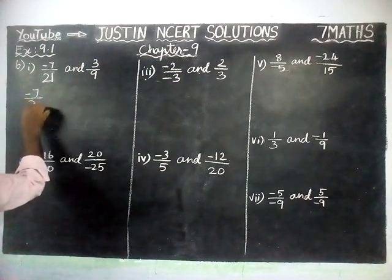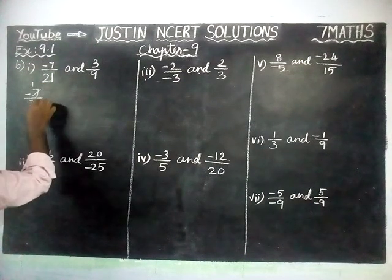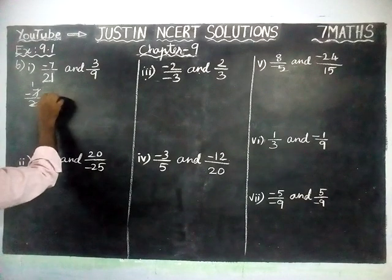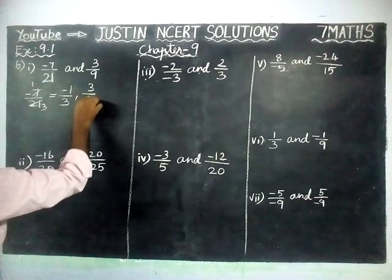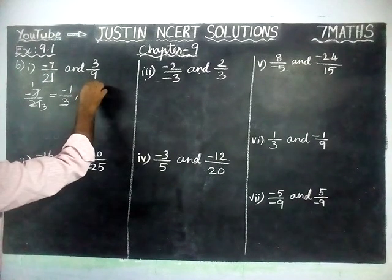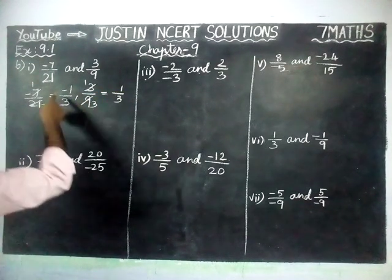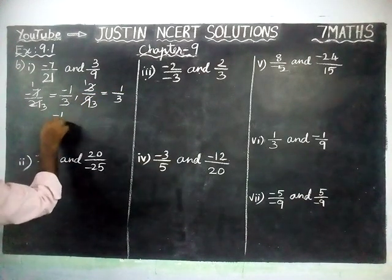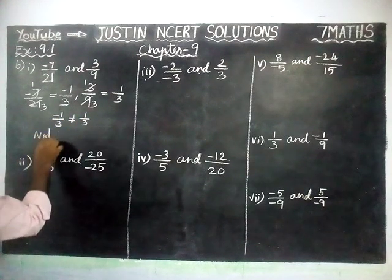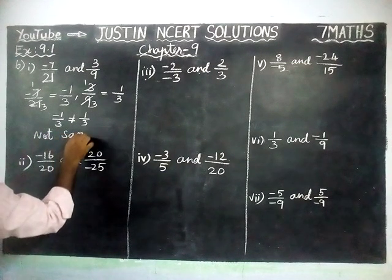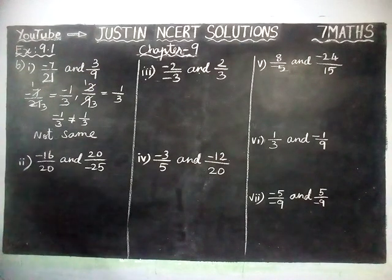First pair: minus 7 by 21. We can simplify — 1×7 is 7, 3×7 is 21 — so that is equal to minus 1 by 3. Next one: 3 by 9. We can simplify by 3 — 1×3 is 3, 3×3 is 9 — so that is equal to 1 by 3. Here minus 1 by 3 is not equal to 1 by 3, so these two are not the same rational number.